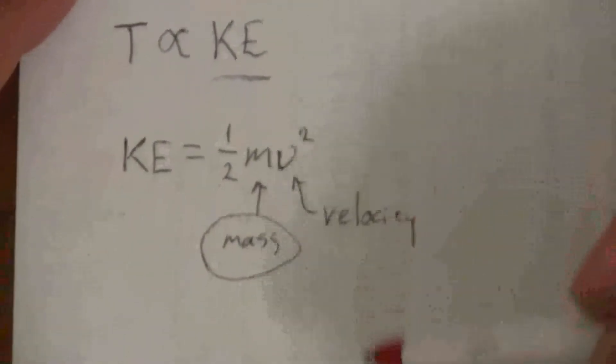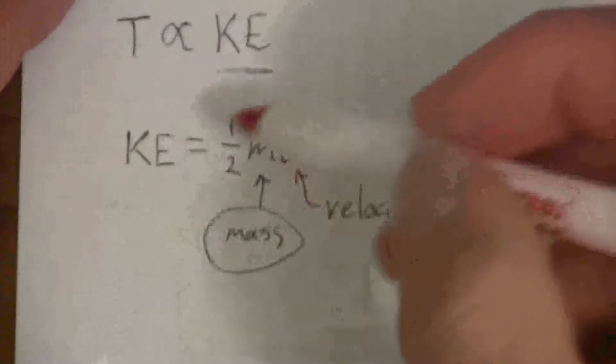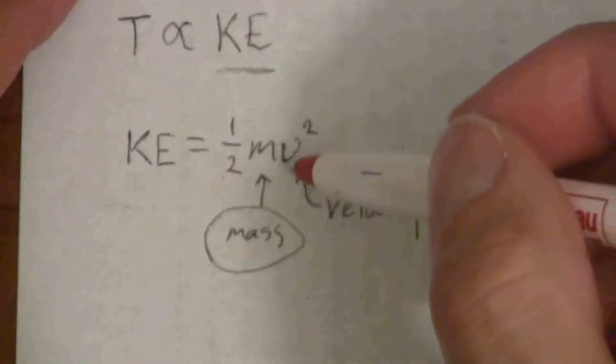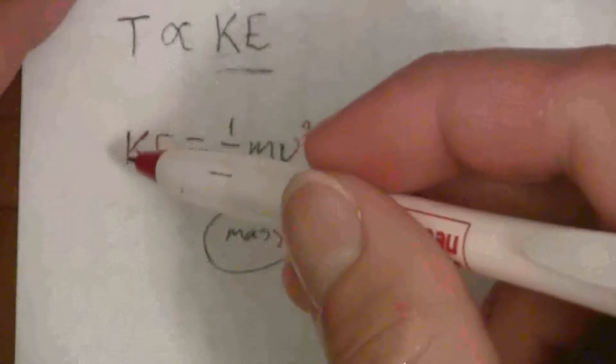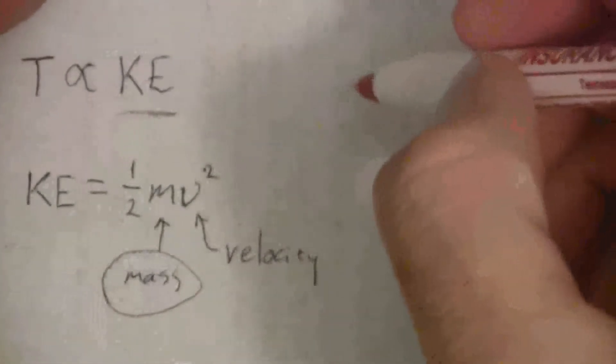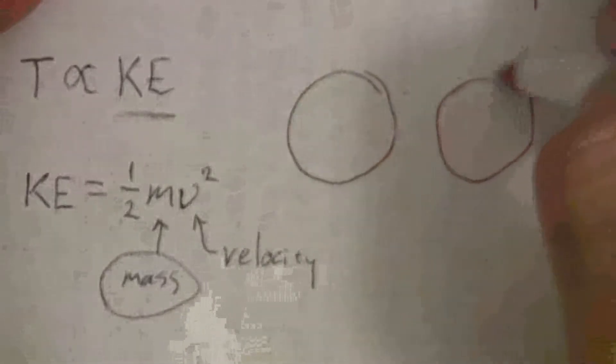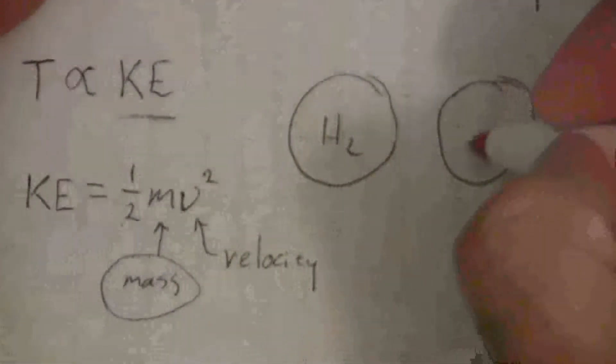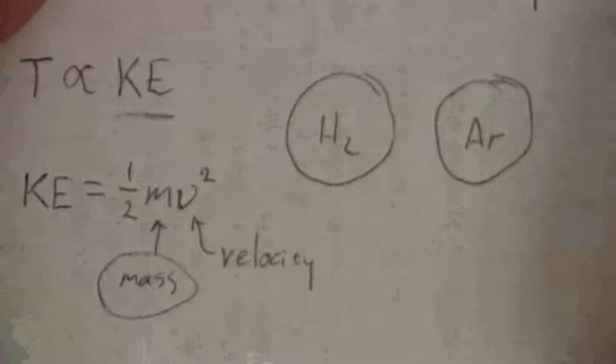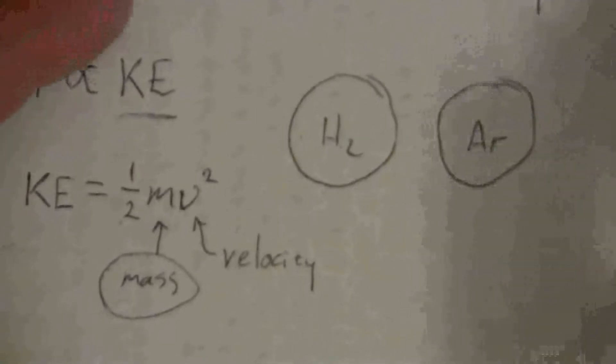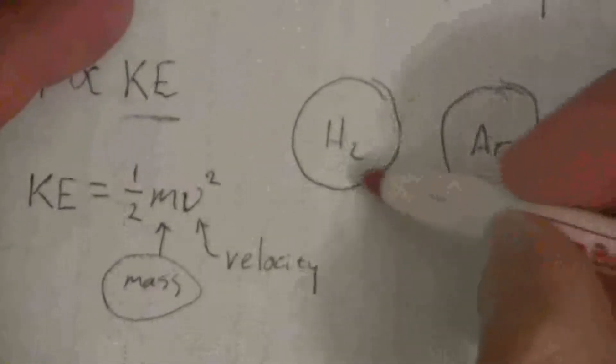So what this means is if you have a heavier gas, one that has a larger mass, it doesn't have to be going as fast to have the same kinetic energy. And it's that kinetic energy that's proportional to the temperature. So say, for example, I have two containers of a gas. One is hydrogen gas, the other one is argon gas. Which one of these is the heavier gas? Well, certainly, the argon is much heavier than the hydrogen.